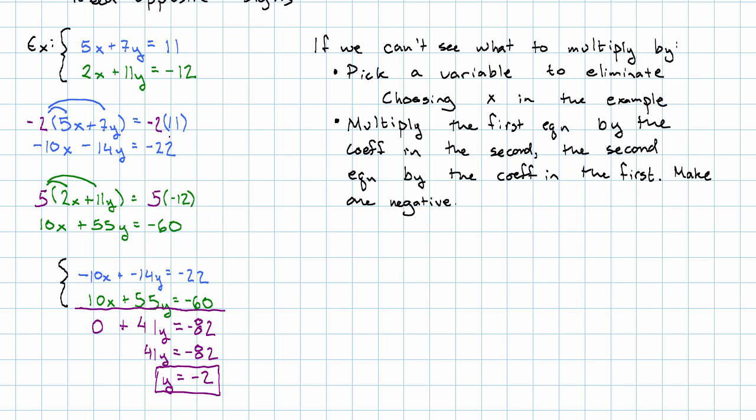Now we go back again to one of our original equations to find out x. I'm going to pick the first equation, 5x plus 7 times, we've discovered that y is negative 2, is 11. 5x plus negative 14 is 11. Add 14 on both sides, we get 5x is 25 and therefore x is 5.